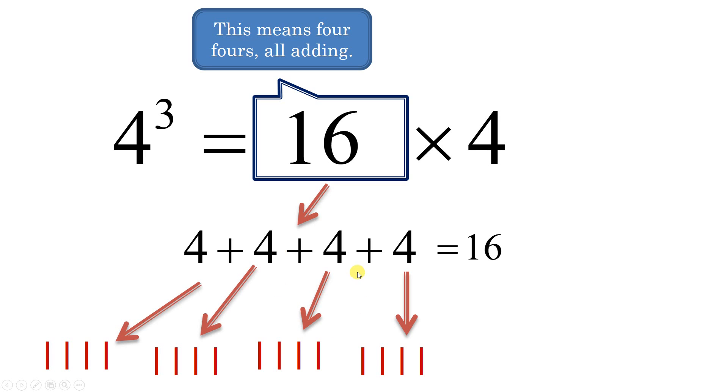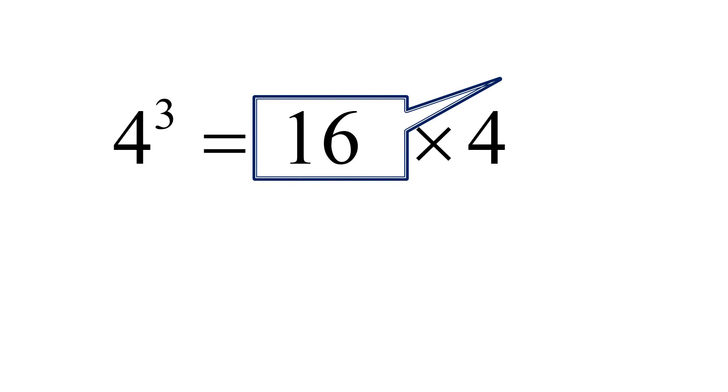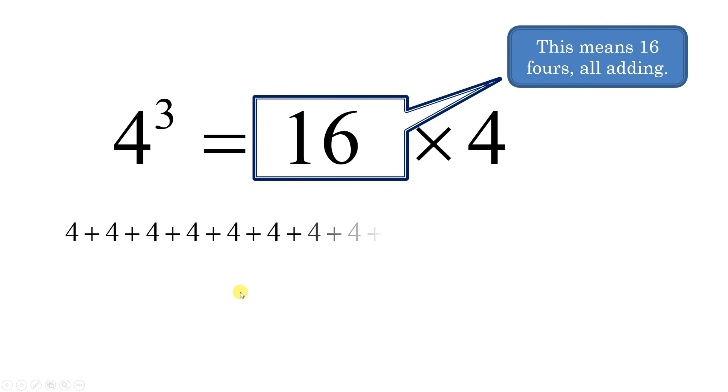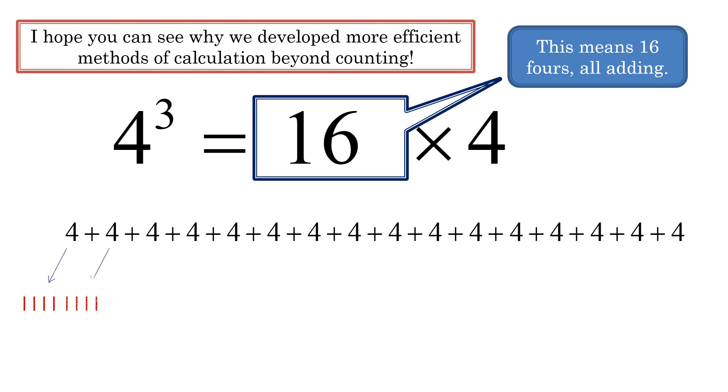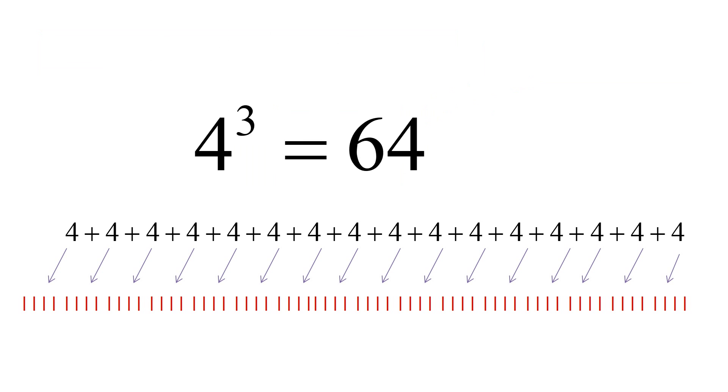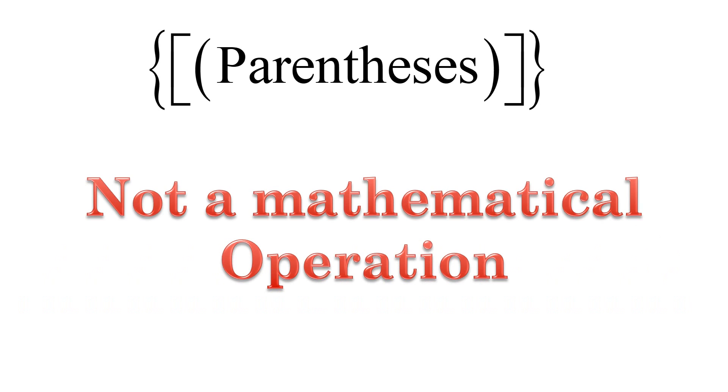Now, what this means is that there are 16 fours all adding. That's what this means right here, 16 fours, all right here, and they're all adding. Now, addition is repeated counting. Each one of those fours is, well, like four little hash marks. So, if you were to not use the shortcut and write them all out and you counted them all up, well, all told, that would be 64. Exponents are repeated multiplication. Multiplication is repeated addition. Addition is repeated counting. Yep, that's what it is.